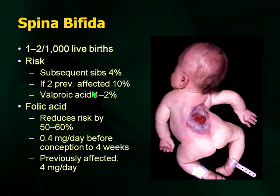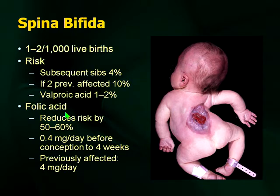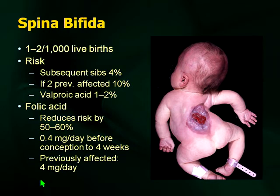We do take care of teenagers, and sometimes they don't know they're pregnant until they've had their baby, so keep that in mind. Folic acid supplementation will reduce the risk by about half. For your own practice: 0.4 milligrams per day before conception to four weeks, and if there's a previously affected sibling, up to four milligrams per day is used. Also, when giving agents such as valproic acid, always supplement with folic acid.